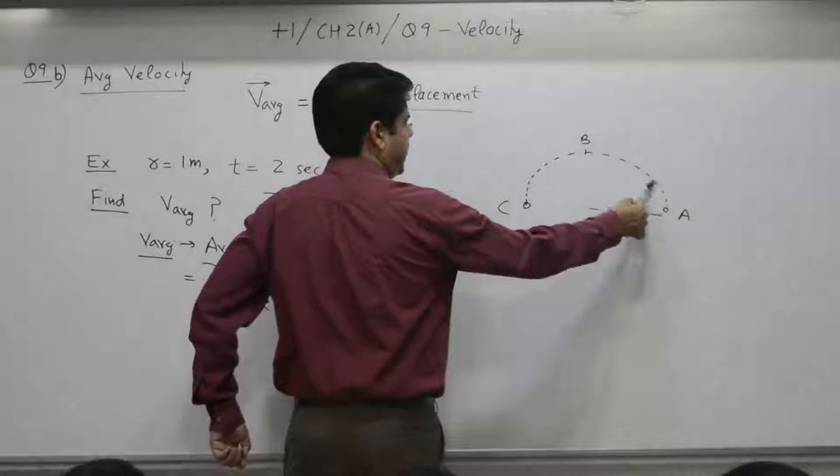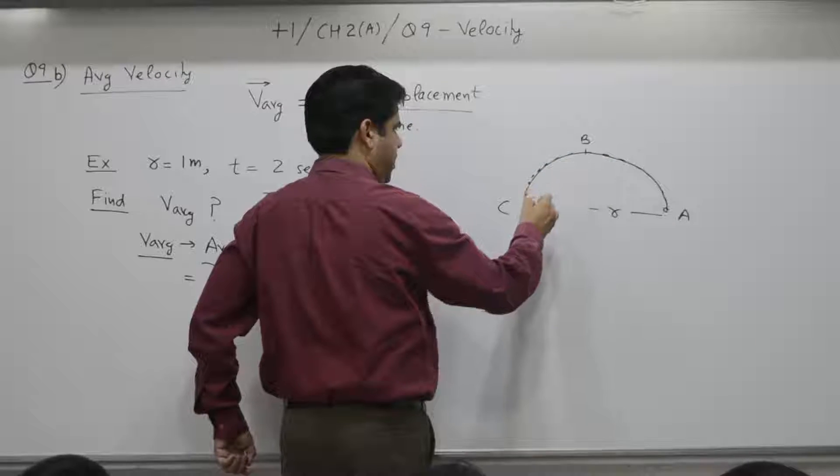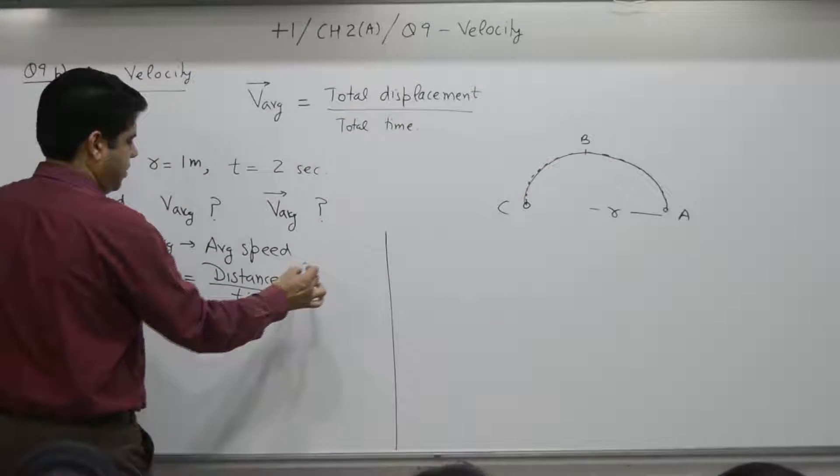If you move from A, B, C, distance covered is this arc, part of the circle, half of the circle, pi r.